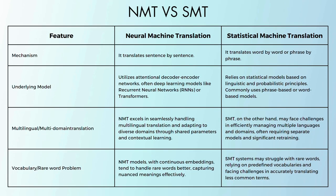Differences between NMT and SMT: NMT translates all sentences at a time, while SMT translates word by word. NMT often utilizes deep learning models like RNN or Transformer for attentional encoder-decoder networks, whereas SMT uses phrase-based or word-based models. NMT handles multilingual translation and adapts to diverse domains through shared parameters and contextual learning, while SMT faces challenges managing multiple languages and domains, often requiring separate models and significant retraining. NMT tends to handle rare words better and captures meaning more effectively, whereas SMT may struggle with rare words and accurate translation.